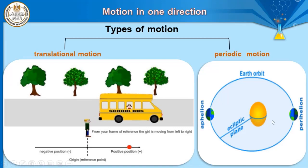Examples of periodic motion include the motion of planets around the sun, the motion of the moon around earth, and the motion of a fan. All of these are called periodic because the object repeats its motion regularly in equal intervals of time. So motion can be classified into two types: translational and periodic. In this term, we will talk about only translational motion, specifically motion in one direction, which is the simplest form of translational motion.